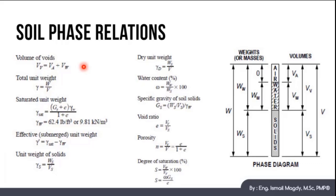Volume of voids Vv equals Va plus Vw, while Va is the volume of air and Vw is the volume of water. Total unit weight gamma equals W over V which is the weight over the volume.